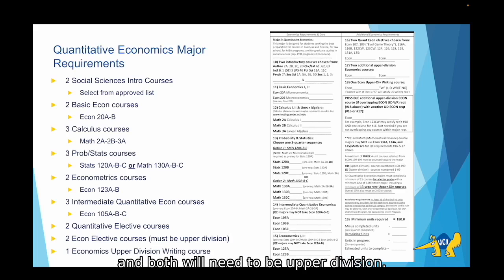In addition, you'll take two econ elective courses and both will need to be upper division. Finally, the last requirement you'll need to take is one economics upper division writing class. So you would not need to find another class for your upper division writing GE, as this major requirement will also fulfill your upper division writing GE.